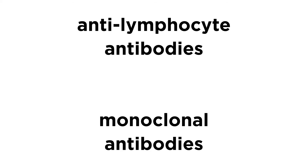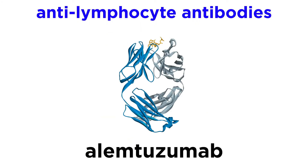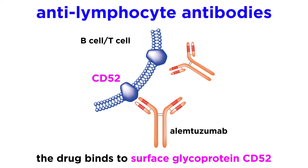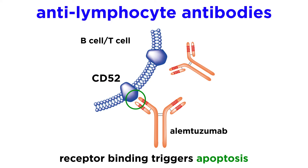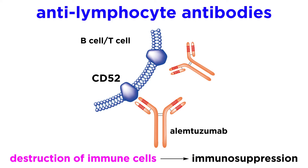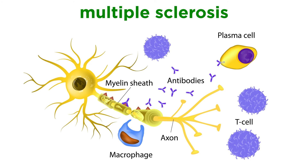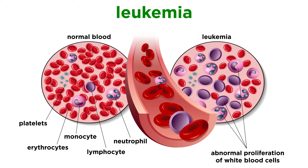The last two categories of immunosuppressive drugs are anti-lymphocyte antibodies and monoclonal antibodies. An example of an anti-lymphocyte antibody is the drug alemtuzumab. This drug binds to CD52, a glycoprotein on the surface of mature B and T lymphocytes. Once it binds to the glycoprotein antigen, it triggers cell apoptosis. By shifting the equilibrium toward increasing apoptosis of lymphocytic cells, an immunosuppressive effect is achieved. This drug is used for the autoimmune condition multiple sclerosis, and more commonly in some leukemias for its anti-cellular proliferative effects on B and T cells.